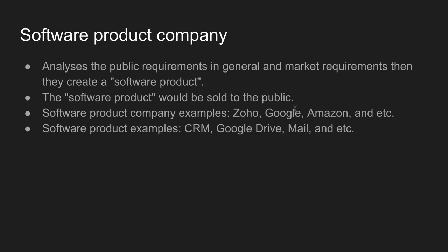A software product company starts developing a product, implements it, and markets it. Examples of business-level software products include CRM — customer relationship management — and WhatsApp. They develop and then sell the product.